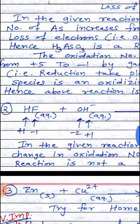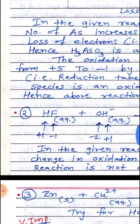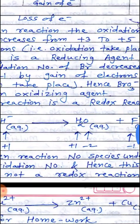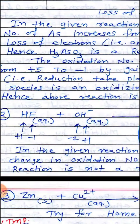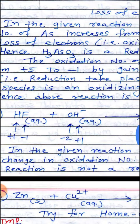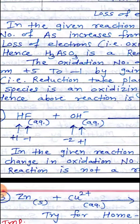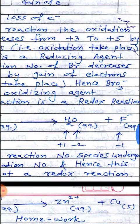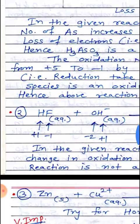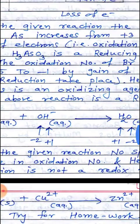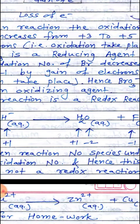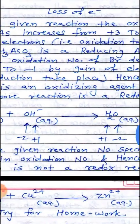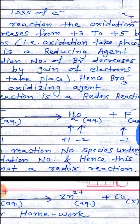Bromine in BrO3 minus decreases from plus 5 to minus 1 by gain of electrons, meaning reduction takes place, hence BrO3 minus is an oxidizing agent. Hence, the above reaction is a redox reaction.